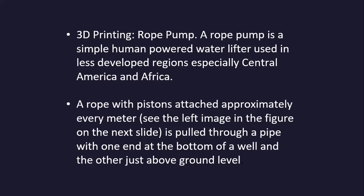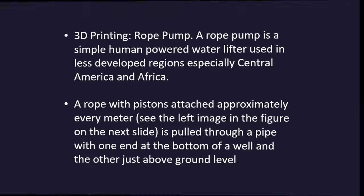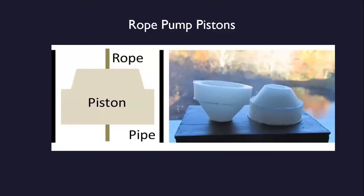A rope pump is a simple human-powered water lifter used in less developed regions, especially Central America and Africa. A rope with printed pistons attached approximately every meter is pulled through a pipe, with one end at the bottom of a well and the other just above the ground level. The rope is then pulled through a pipe.